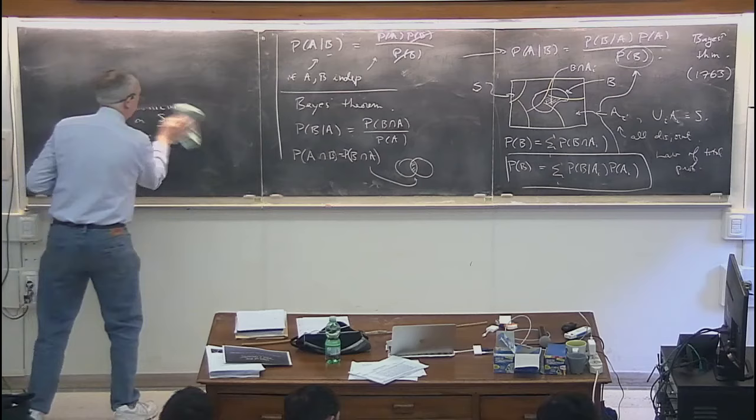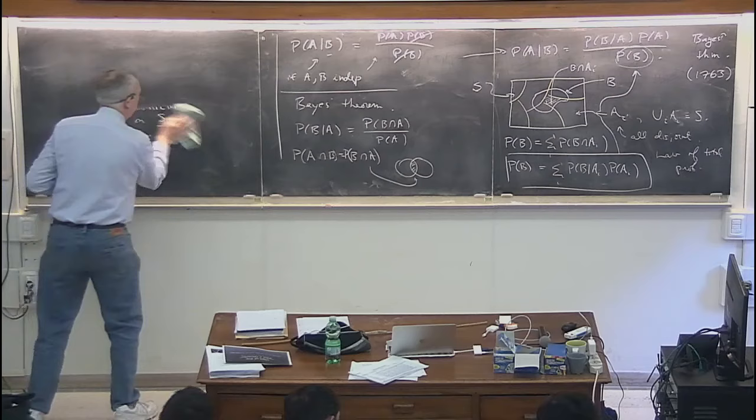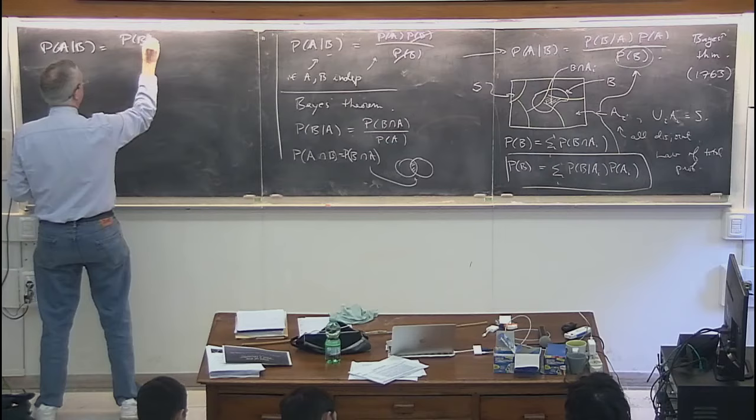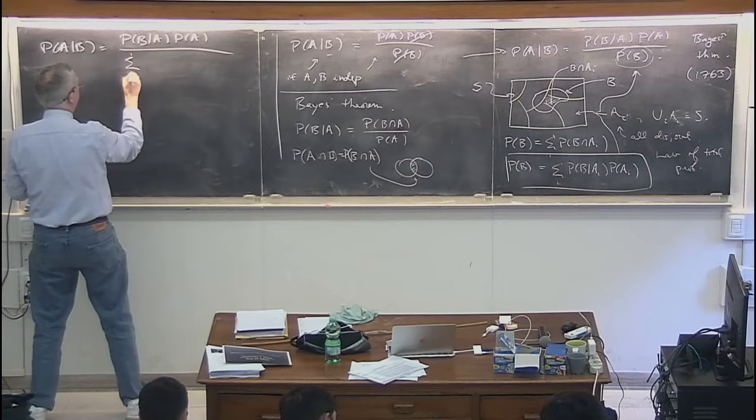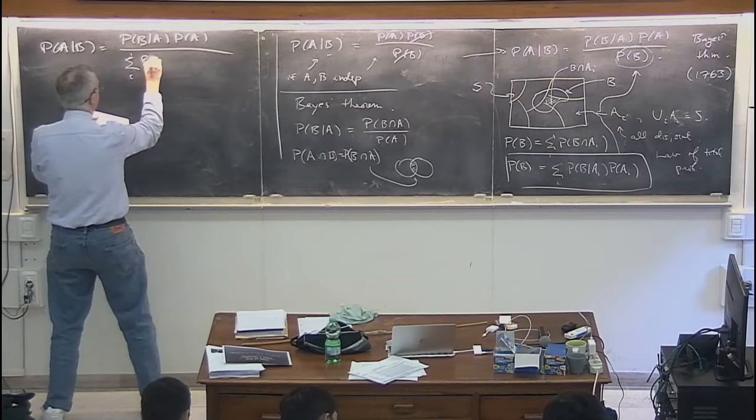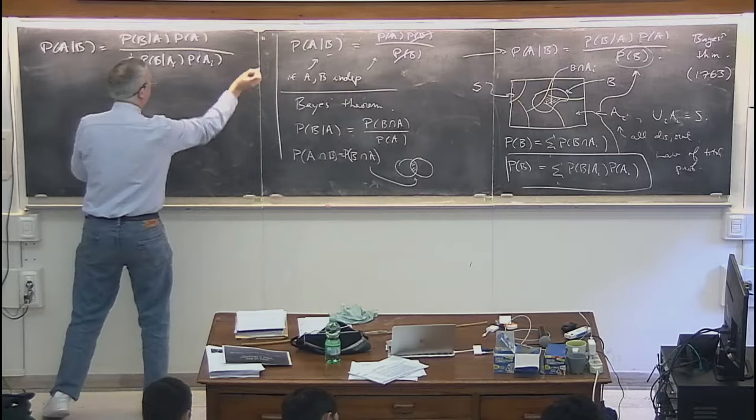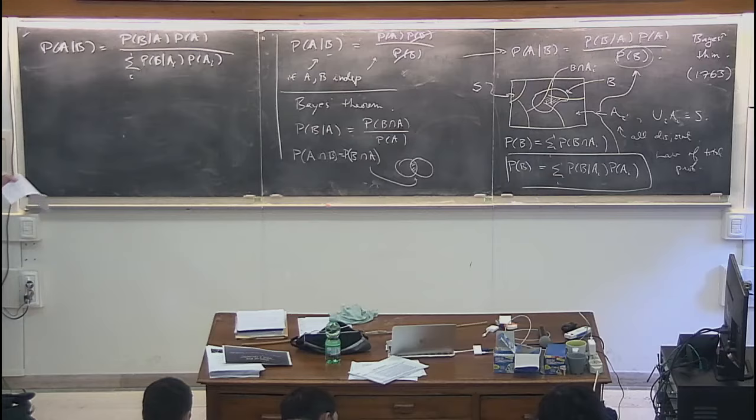Let me rewrite Bayes' theorem in the form that we will actually use it — and there is a homework problem that applies this on your problem sheet for this afternoon. P of A given B equals P of B given A times P of A, divided by the sum over i of P of B given A_i times P of A_i. That's the version of Bayes' theorem that we will come to know and love and actually use.